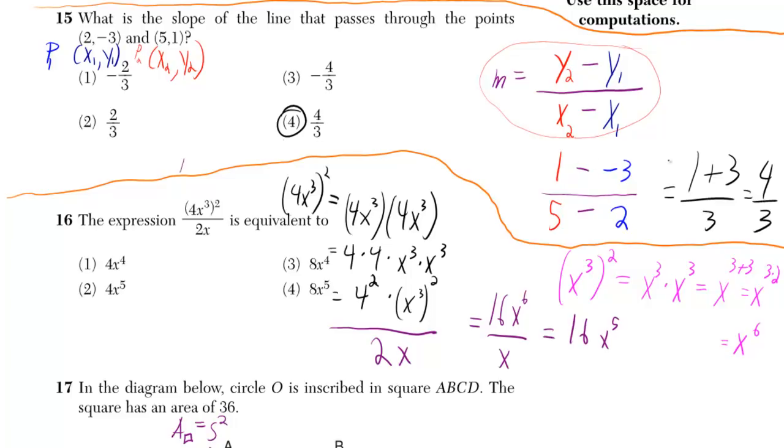1 minus a negative 3 turns into 1 plus 3, which is just 4. 5 minus 2 is 3, so we get 4 over 3. Final answer.